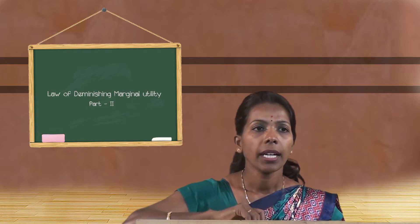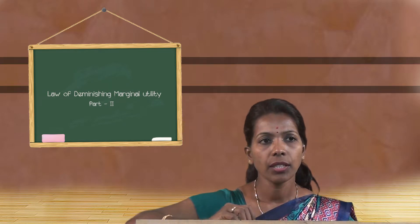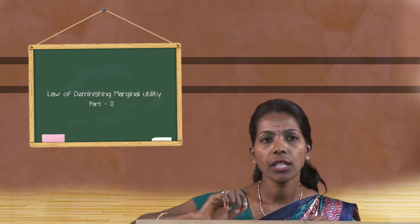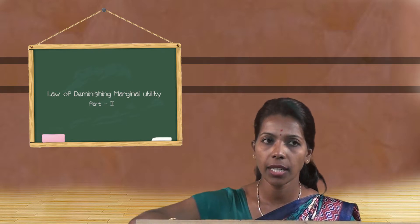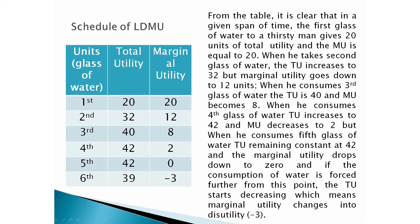When marginal utility becomes 0, the consumer gets maximum satisfaction — this occurs at the fifth glass of water. If the consumer then takes a sixth glass of water, the total utility decreases to 39 and the marginal utility becomes minus 3, which indicates that marginal utility has changed into disutility. Because when the consumer consumes the sixth glass of water in excess, utility changes into negative utility or disutility.